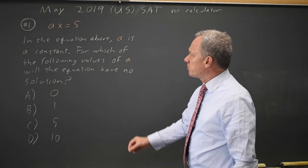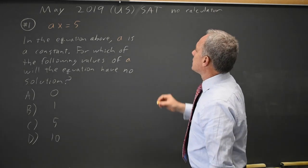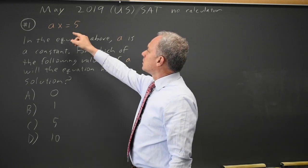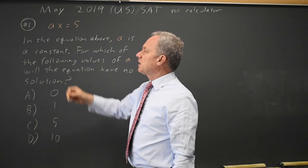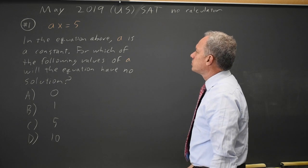This is no calculator, question number one from the May 2019 U.S. SAT. College Board asks for what values of a does this have no solutions, and they give you four choices.